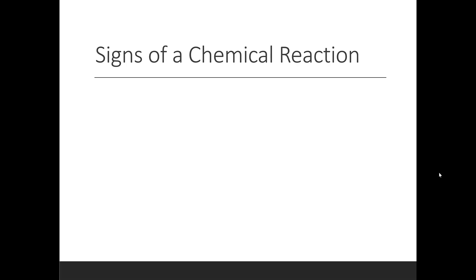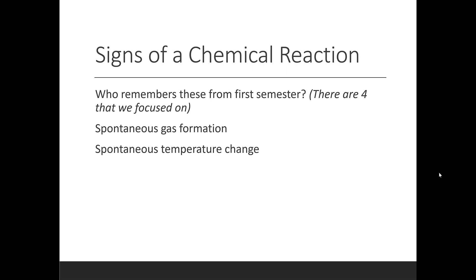So how can we be sure that a chemical reaction is occurring? Hopefully you remember these signs from last semester when we first learned about chemical changes, but there are four main signs that we looked at and that's spontaneous gas formation, so the creation of a gas when there wasn't previously a gas, a spontaneous temperature change either increase or decrease,